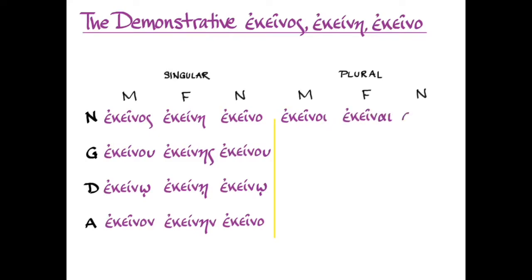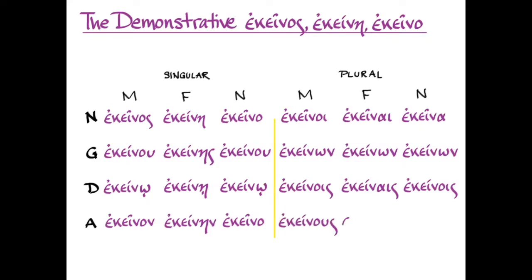And then when we move to the plural: nominative ἐκεῖνοι, ἐκεῖναι, ἐκεῖνα. Genitive: ἐκείνων, ἐκείνων, ἐκείνων. Dative: ἐκείνοις, ἐκείναις, ἐκείνοις. And accusative plural: ἐκείνους, ἐκείνας, ἐκεῖνα.